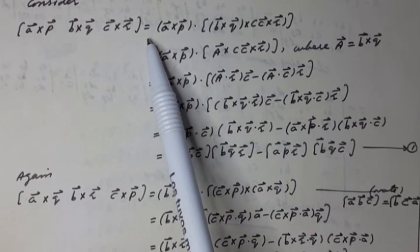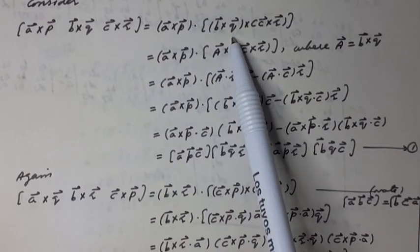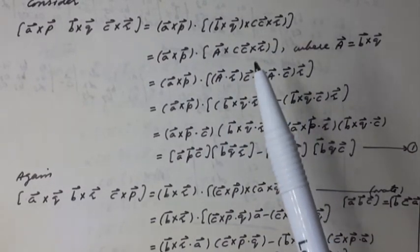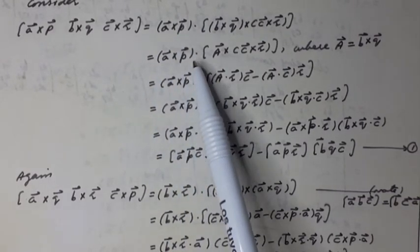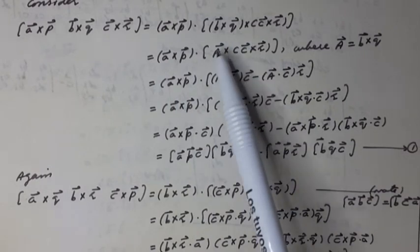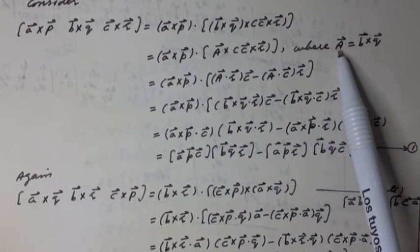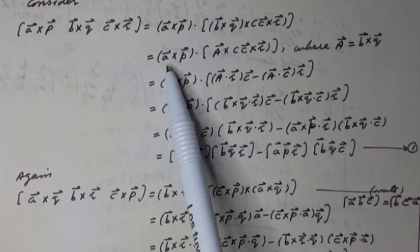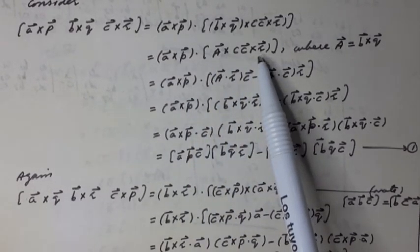A vector cross P vector box can be written as equal to (A vector cross P vector) dot (B vector cross Q vector cross C vector cross R vector). It can be written as equal to A vector cross P vector dot capital A vector cross C vector cross R vector, where capital A vector is taken as equal to B vector cross Q vector. It can be written using the formula of vector triple product.